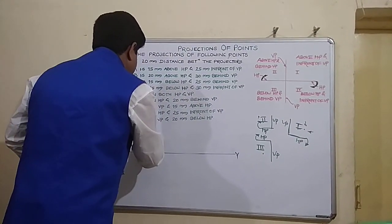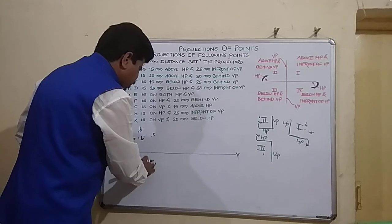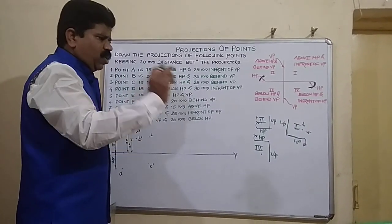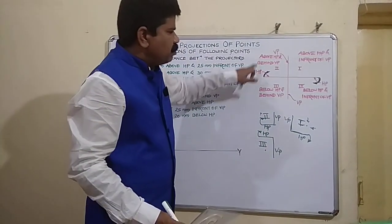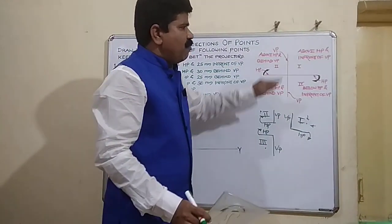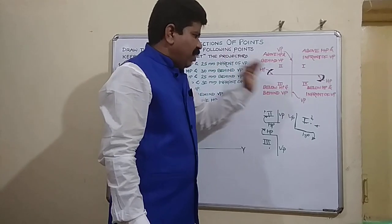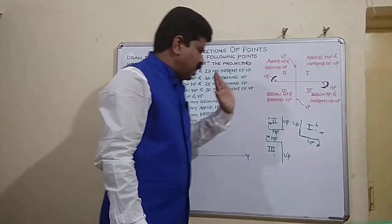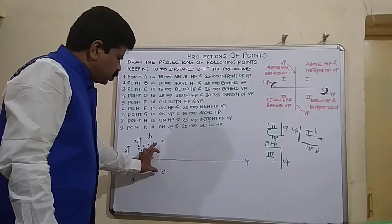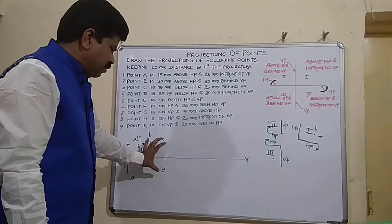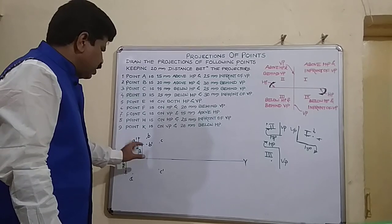The front view point is a dash point because it is below HP. And 25 mm behind VP gives the top view point above XY. So C dash is below XY and C is above XY. Remember: above HP and below HP relate to the front view, whereas in front of VP and behind VP relate to the top view. Front view notations always use a dash; top view notations always use plain alphabets. So C and C dash are marked accordingly.